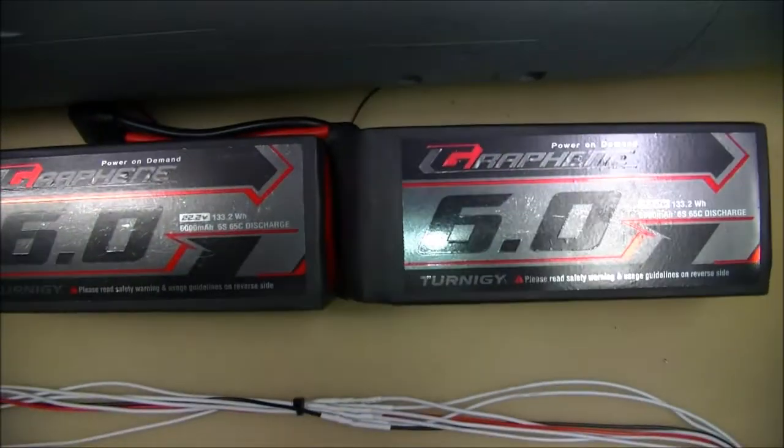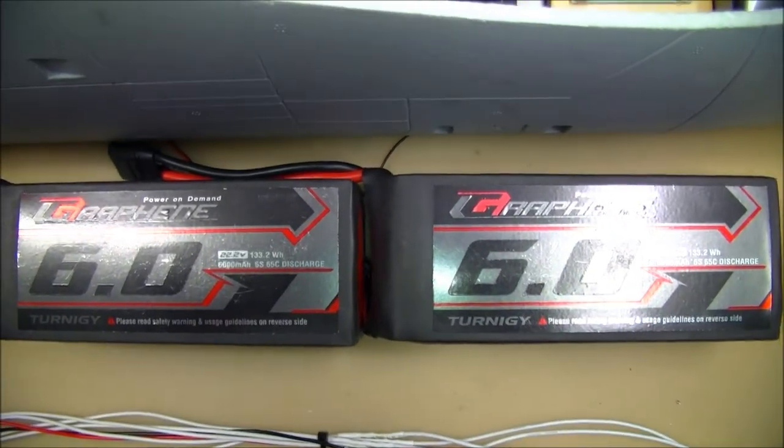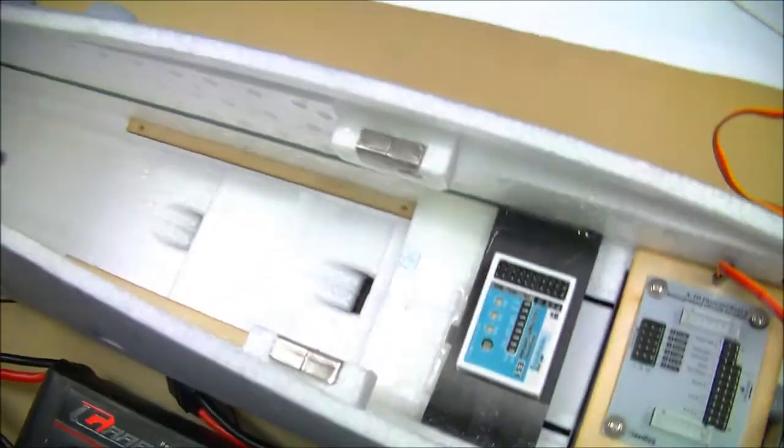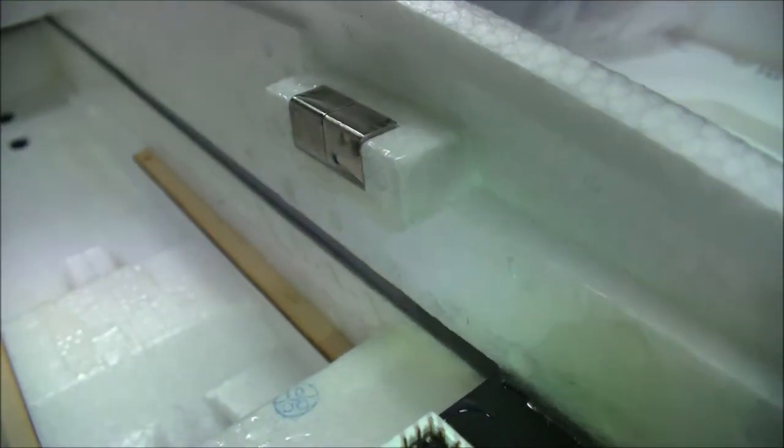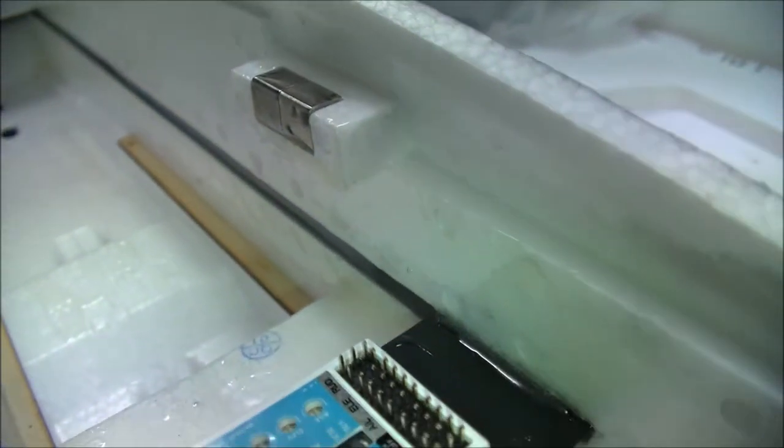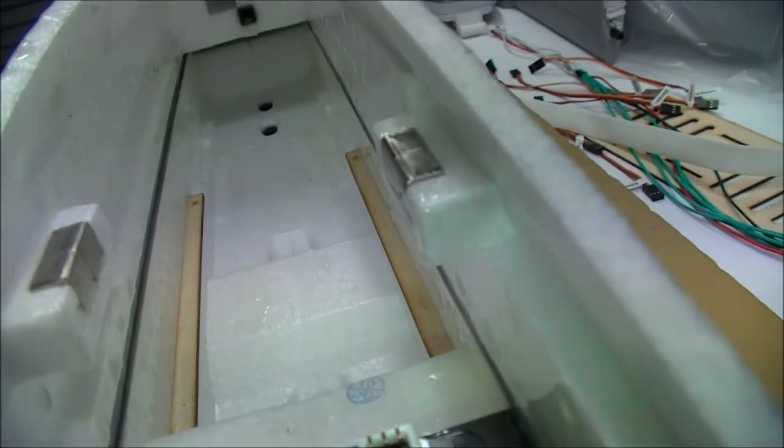So, considering that the combined weight of these two batteries is close to 5.5 lbs, I thought it would be a good job to reinforce the bay. So I've epoxied in a 6mm square carbon rod on both sides as reinforcing.